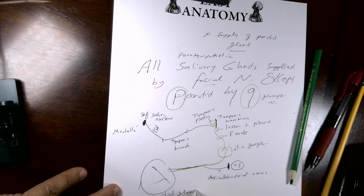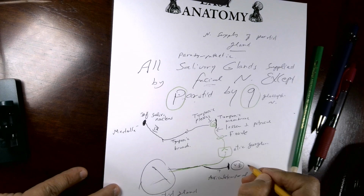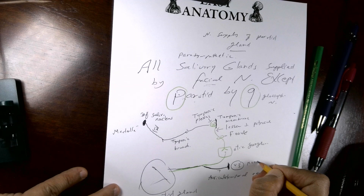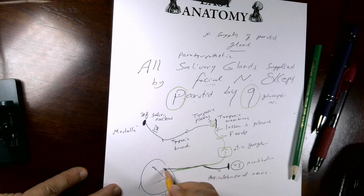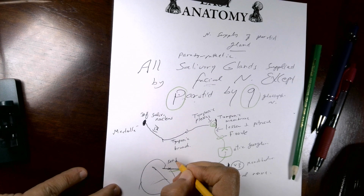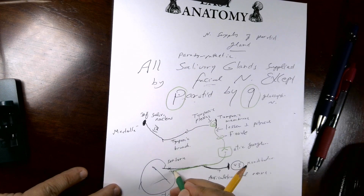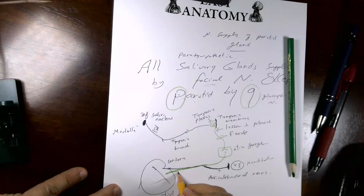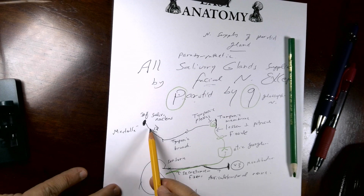The postganglionic fibers travel with the auriculotemporal nerve to the parotid gland. The auriculotemporal nerve, coming from the mandibular division of the trigeminal nerve, provides the sensory supply of the gland. The parasympathetic secretomotor fibers travel alongside it to the gland.